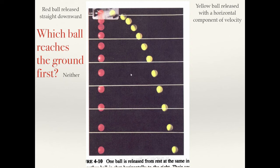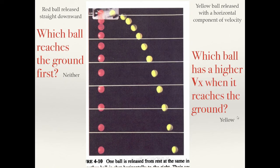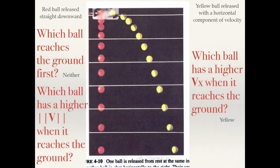Which ball has a higher horizontal component of velocity when it reaches the ground? The red ball has no horizontal velocity — it falls straight down. The yellow ball has a horizontal component that remains constant throughout, since we're ignoring air resistance. So the yellow ball has a higher horizontal component of velocity — it has a constant, non-zero vx — while the red ball has none at all.